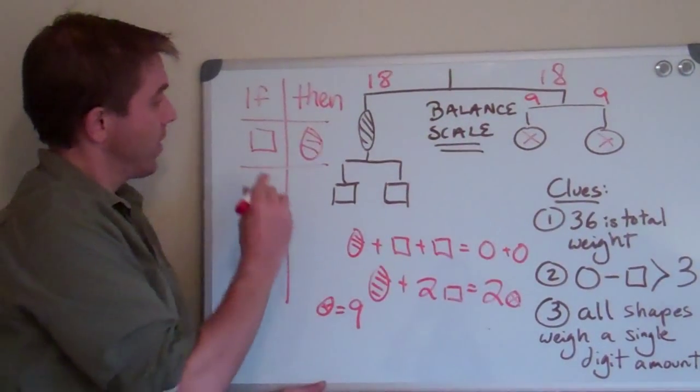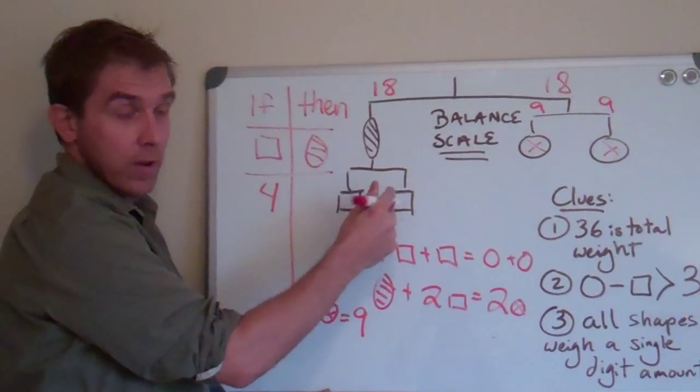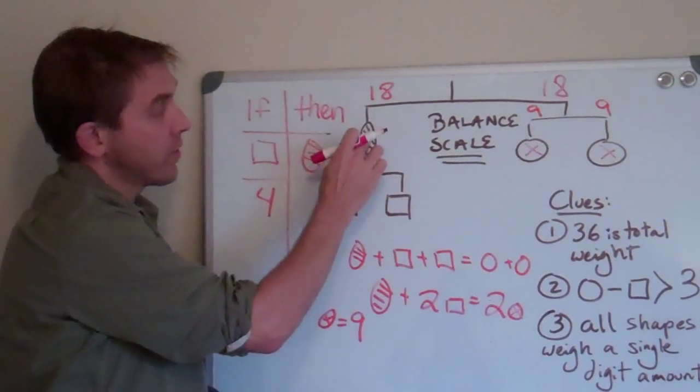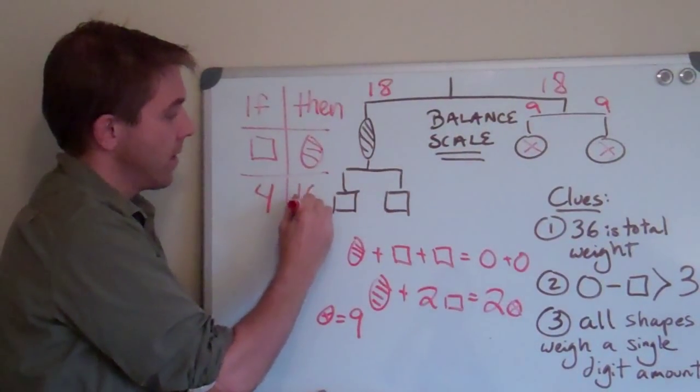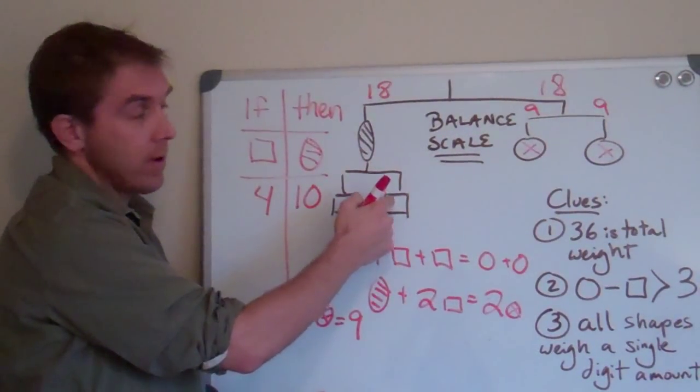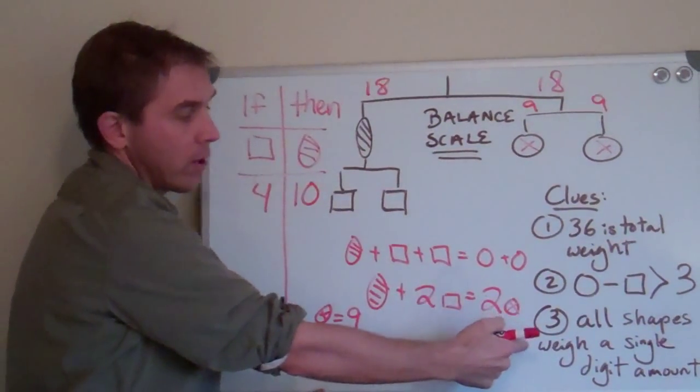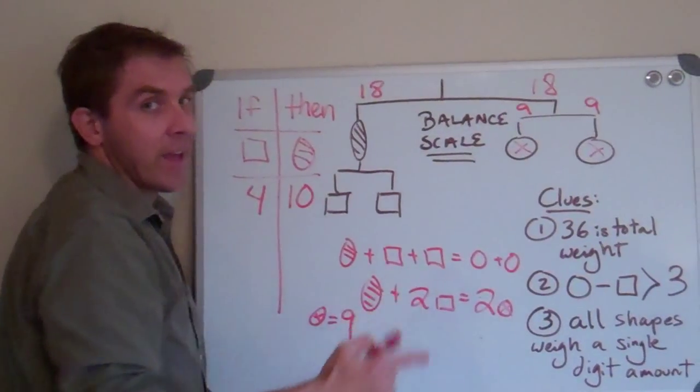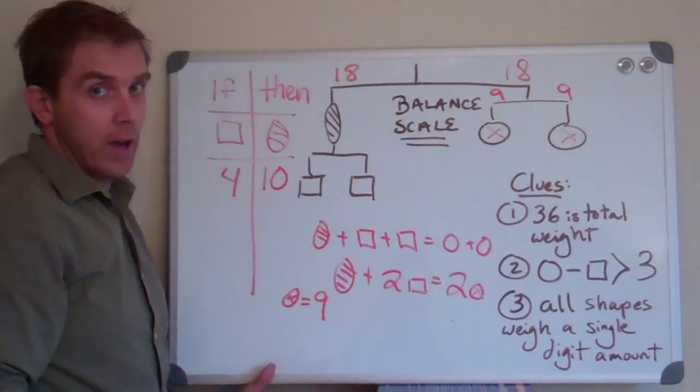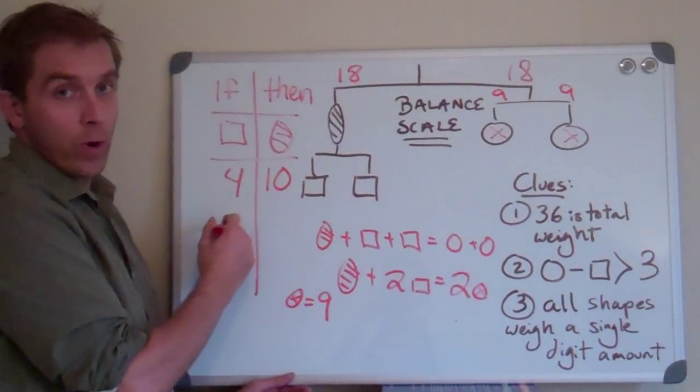The square is four. Each of these is four. Total is eight. This would have to be ten. Four plus four is eight. Plus ten is eighteen. But clue number three, right here, says it can't be ten, because all the weights are single digit amounts. So, this wouldn't work.